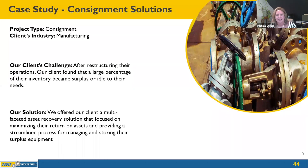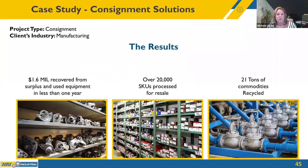Here is a client success story. This case study shows how our consignment solution supported asset recovery for a large North American manufacturer with multiple global operations. A no-cost valuation was performed to determine all of the client's surplus. A multi-pronged sales solution included consignment, auction sales, and private treaty sales, with streamlined logistics managed by NRI. Results: $1.6 million recovered from surplus and used equipment in less than one year, over 20,000 SKUs processed for resale, and 21 tons of commodities recycled.